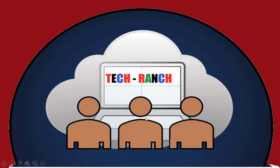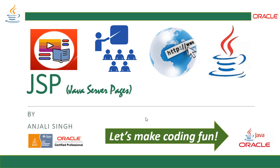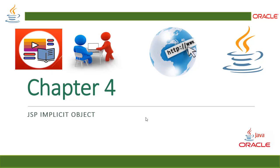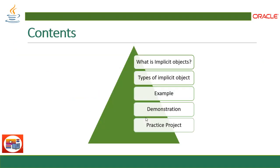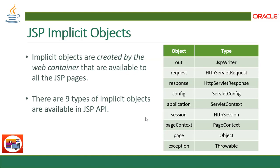Hi, welcome to Tech Ranch, a place where we learn and earn technical skills in the most efficient way. Let's make coding fun. JSP — Java Server Pages, Chapter 4: JSP Implicit Objects. In this session we are going to learn all about implicit objects, the different types of implicit objects in JSP API, examples, demonstration, and the practice project for your homework.